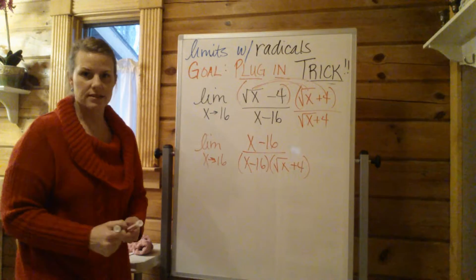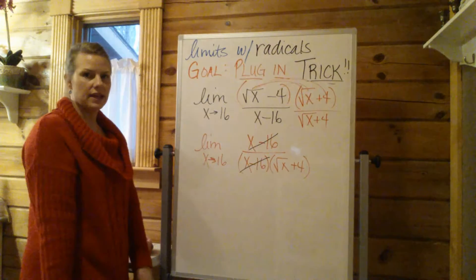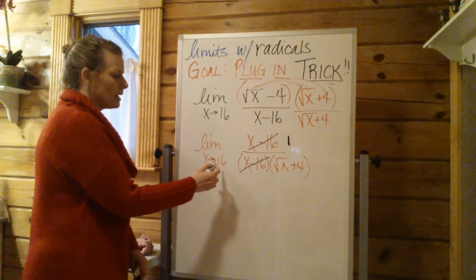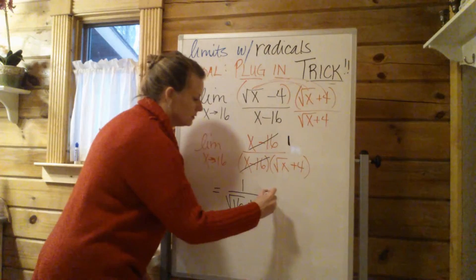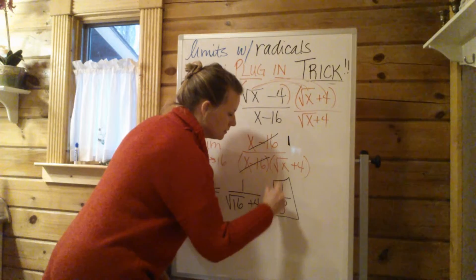Still have my limit notation out here. And what happens? Since I rewrote this whole thing, I can now cancel out the x minus 16s. I still have a 1 up top. Don't forget about that. But now, when I plug 16 in, I will have 1 over the square root of 16 plus 4, which is 1 over 4 plus 4. In other words, 1 over 8.